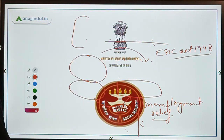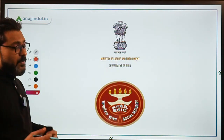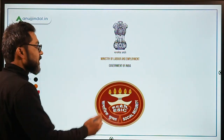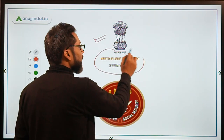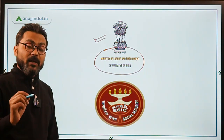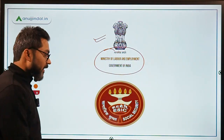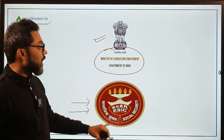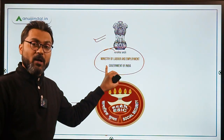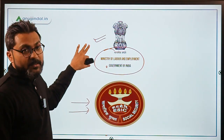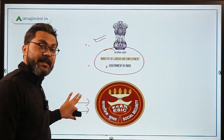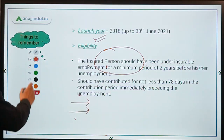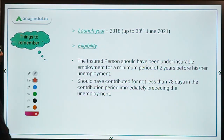Since we are talking about insured persons and labor and employment related things, the ministry should be the Ministry of Labor and Employment. This scheme is being implemented by the Employee State Insurance Corporation (ESIC), which is an autonomous agency under the Ministry of Labor and Employment.